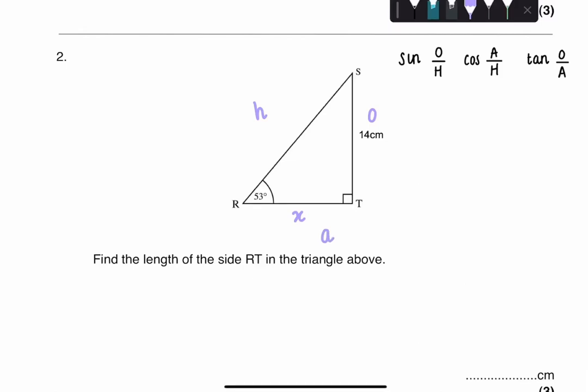So look at the information that you're given. You're given an angle, you're given opposite, and you're trying to work out adjacent. So which one of these trig functions uses O and A? It's going to be tan. So this is the one that we select.